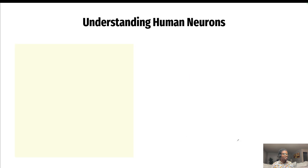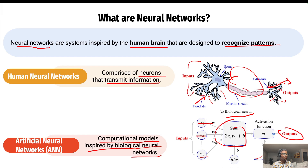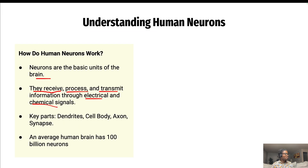Let's understand some characteristics of human neurons. Neurons are the basic units of the brain — for your brain to work you need neurons, and you have billions and billions of them. A neuron is able to receive information, process it, and transmit it through electrical and chemical signals — just like input, process, and output. The key parts are the dendrites, the cell body, the axon, and the synapse. An average human brain has 100 billion neurons.